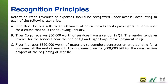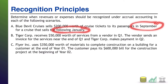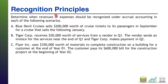All right, welcome back. So we're going to go in order here. Scenario A: Blue Devil Cruises sells $200,000 worth of cruise tickets to its passengers in September for a cruise that sails the following January. When do we, in this case, recognize the revenue from selling the cruise tickets?